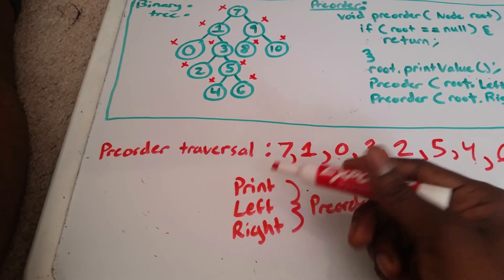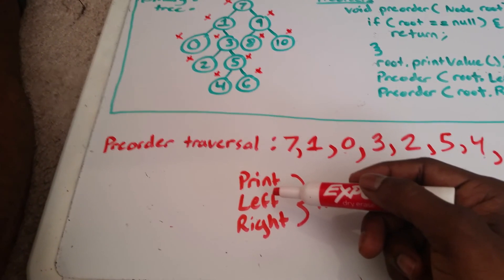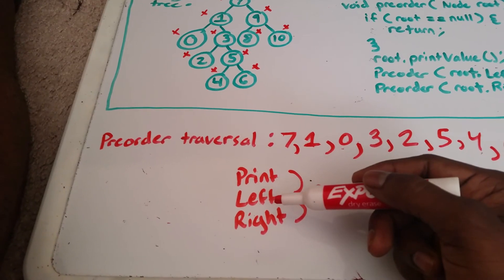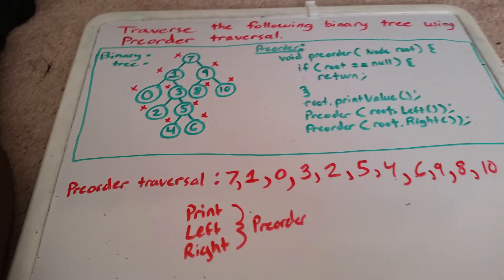Print the first node you see. Go as far left as you can. Then go as far right as you can. Thank you. See you guys in the next video.